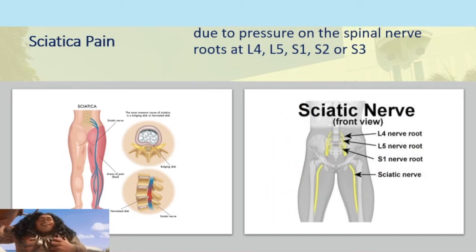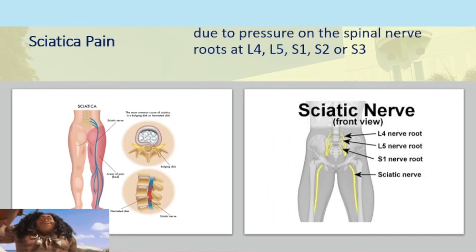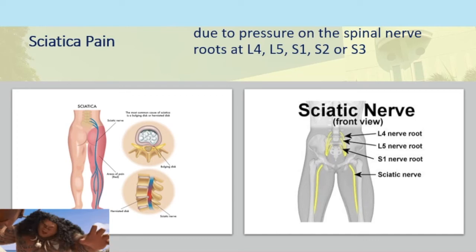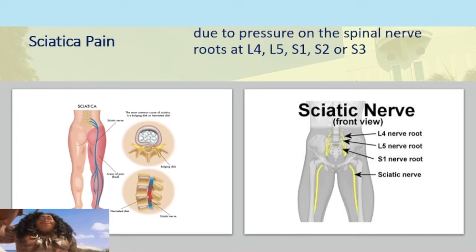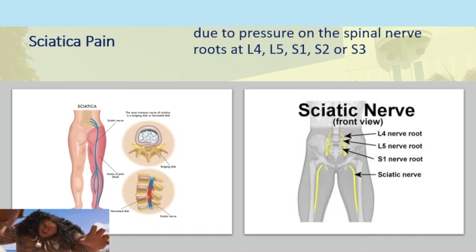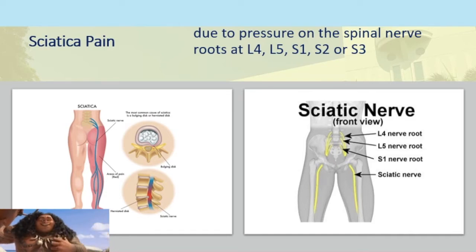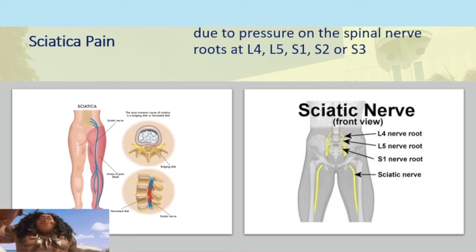Sciatica pain is usually due to pressure on the spinal nerve roots found at L4, L5, S1, S2, and S3 — that is where the nerve root of the sciatic nerve can be found. With that compression, it leads to pain along the leg.